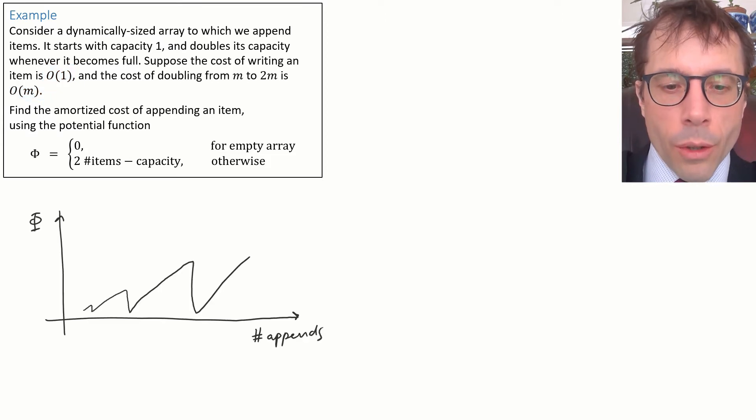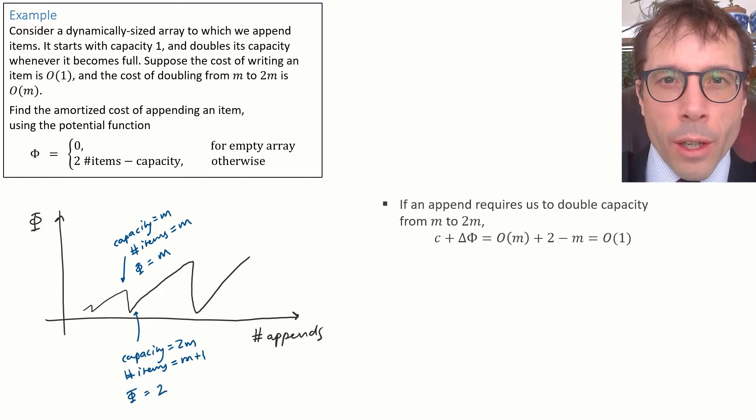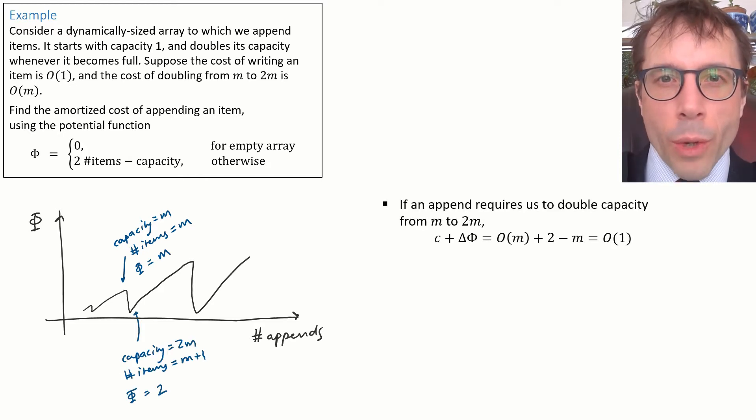First thing I'd do is I'd sketch out the typical behavior of the potential function just to orient myself. You should have seen when you work through the explicit calculations yourself that the potential function increases bit by bit until the array doubles, at which point it falls back down. So it does this sort of sawtooth. This bird's eye picture makes it easy for us to set out what it is we actually have to calculate. There are two cases we have to think about. Either the append requires us to double, or it doesn't.